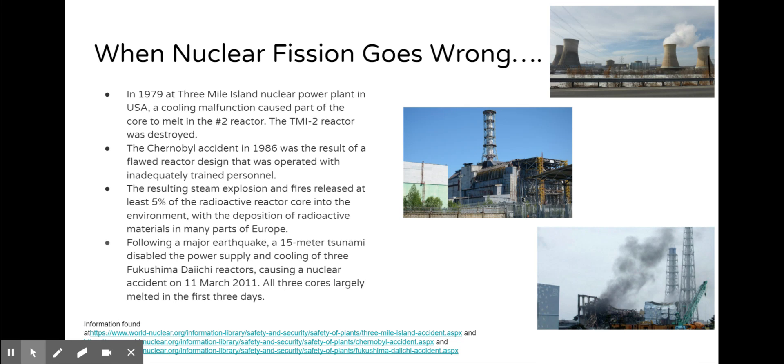Following a major earthquake, a 15 meter tsunami disabled the power supply and cooling of three Fukushima Daiichi reactors causing a nuclear accident on March 11th of 2011. All three cores largely melted in the first three days.